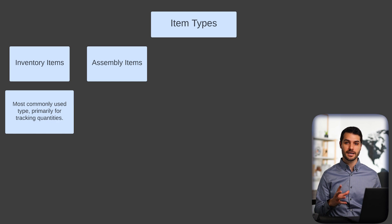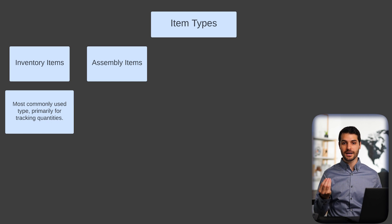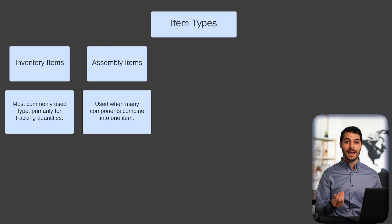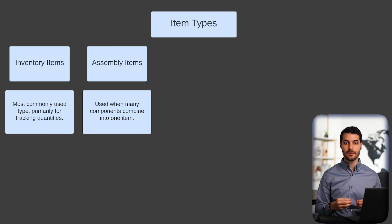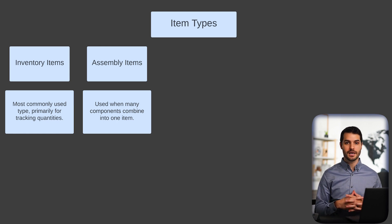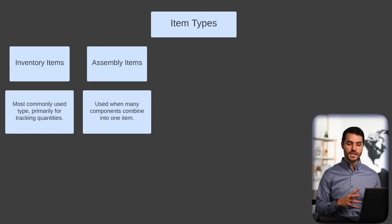Assembly items are commonly used when you're building something — that final completed product in which many components are going into it would be considered the assembly item. So if you're making bikes, the bike itself that's built at the end is the assembly item. Maybe there's a seat, wheels, a handlebar — all of those different things going into making that bike can be logged as inventory type items. You can also track assembly items with lot numbering and serializing.